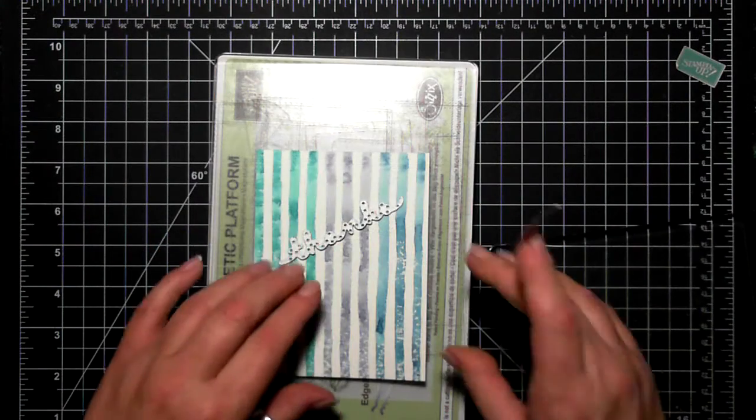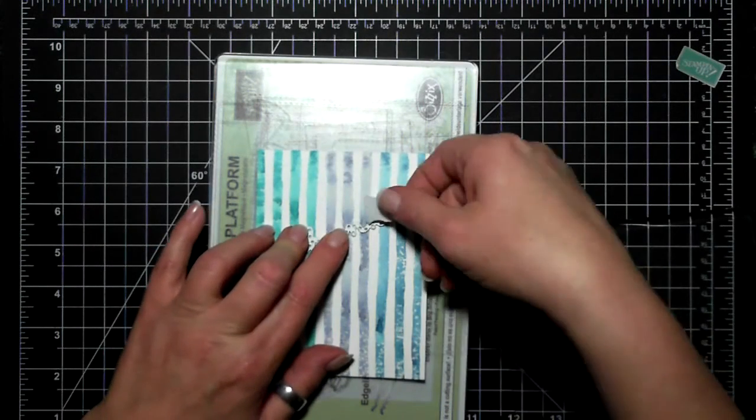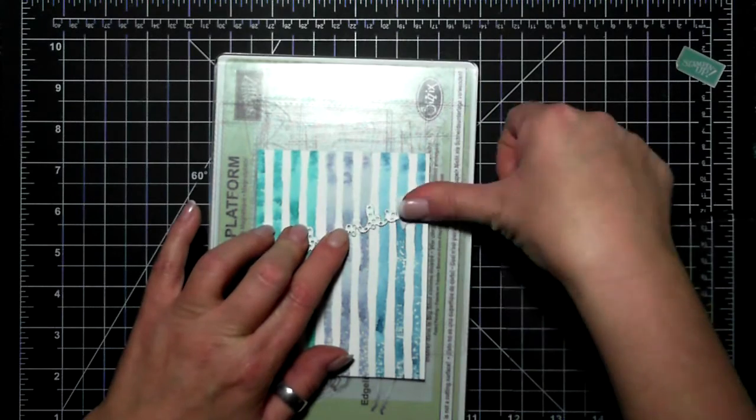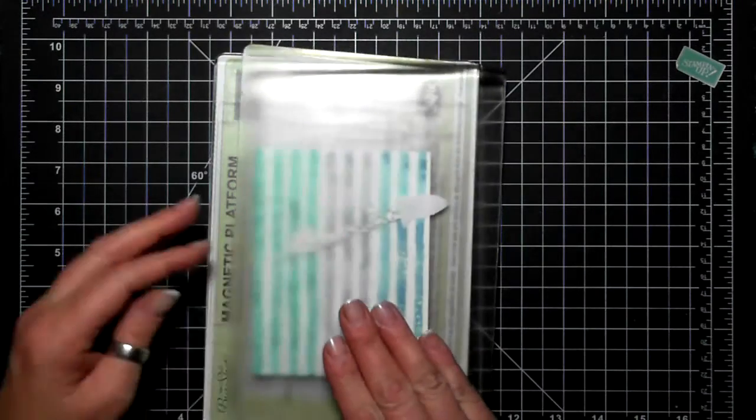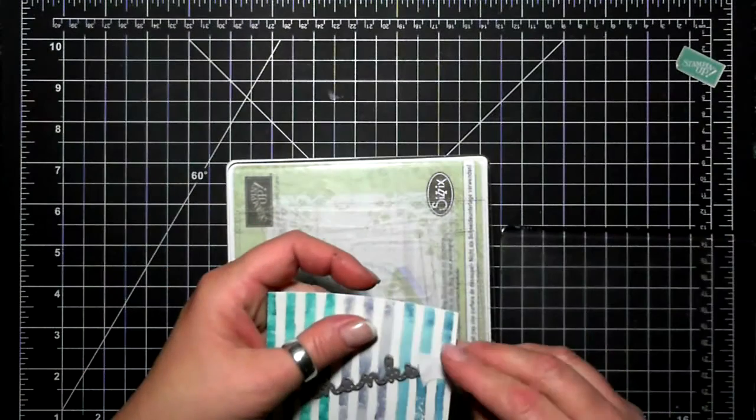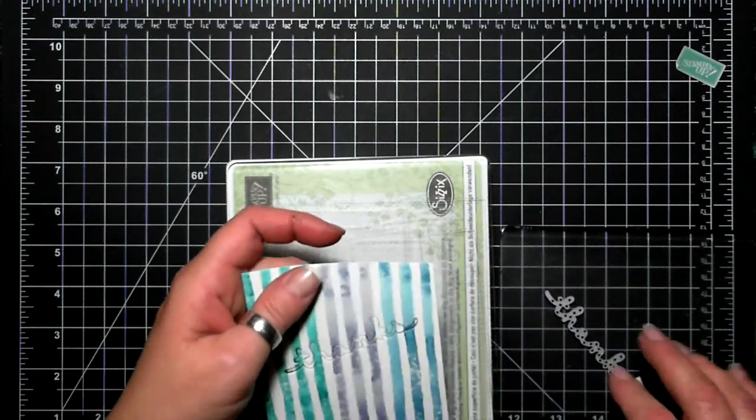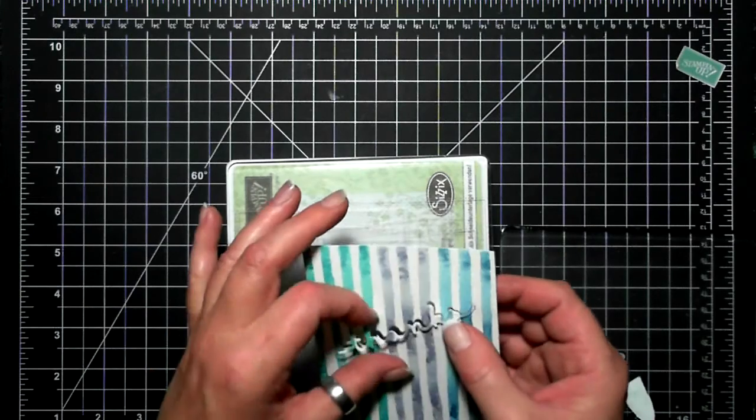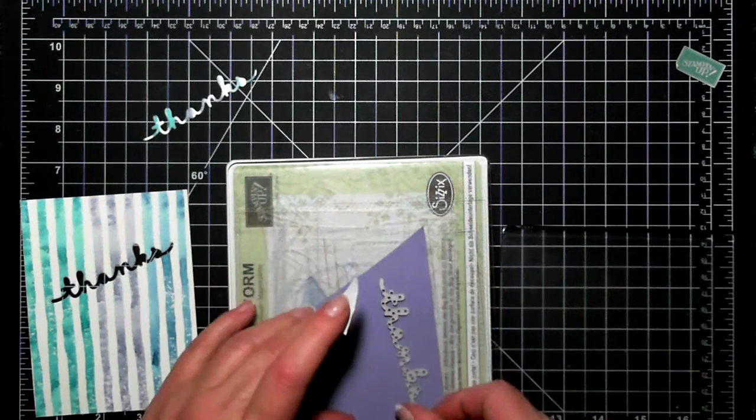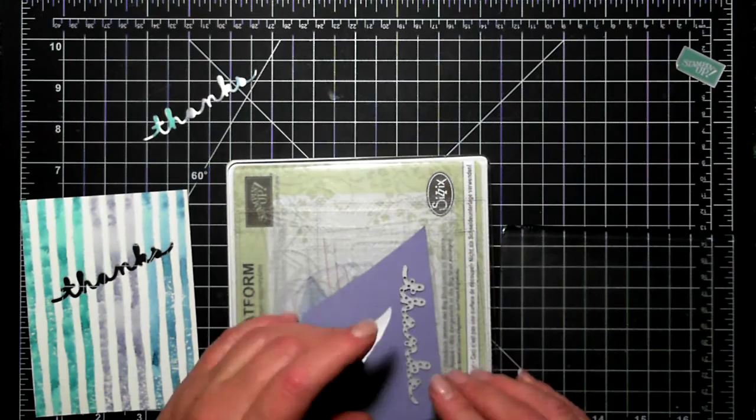Now I'm using the greetings thinlit, new to me, so I was really excited to use it. Ran it through my big shot on my magnetic platform. I still needed to put a little bit of post-it tape note there; it did come out quite easily, however it does kind of shift on me.